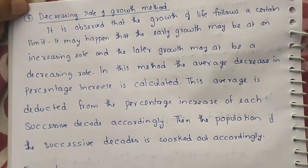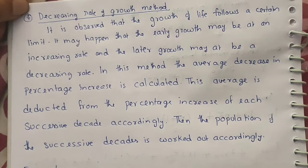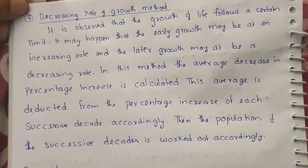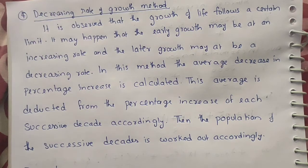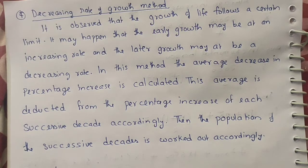When the population grew 40%, then 35%, there was a 5% decrease. When it grew 28% after 35%, there was a 7% decrease. This is the decrease in the percentage of increase in population — how much the growth rate percentage is falling. In this method, we take the average of these decreases and then deduct it from the percentage increase of each successive decade to calculate future population.